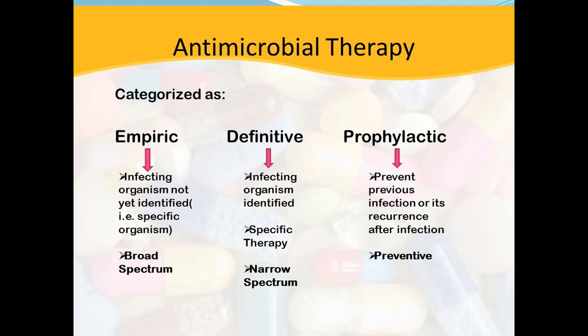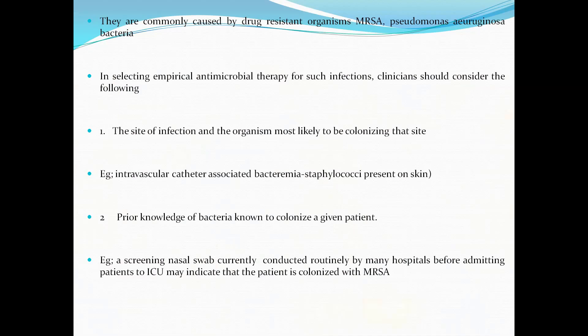In case of empiric therapy, the infecting organism is not yet identified — that is, broad-spectrum therapy is used. In case of definitive therapy, the infecting organism is identified — that is, narrow-spectrum, specific therapy. Hospital-acquired infections are commonly caused by drug-resistant organisms such as MRSA, Pseudomonas, etc.